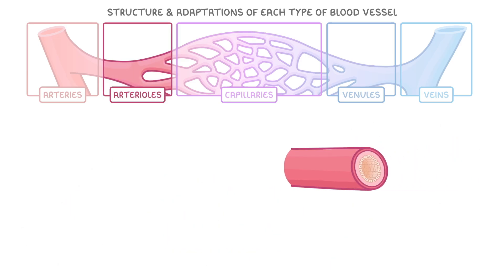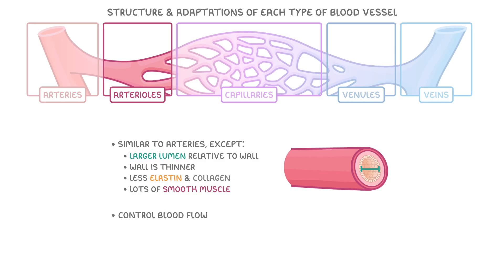Moving on to arterioles, these are fairly similar to arteries except that they've got a larger lumen relative to their wall because the wall is thinner. They also contain less elastin and collagen than arteries do, but they still have lots of smooth muscle. Because of all this muscle, arterioles are also able to control blood flow through vasoconstriction and vasodilation, which means they can regulate how much blood moves on into the capillaries.